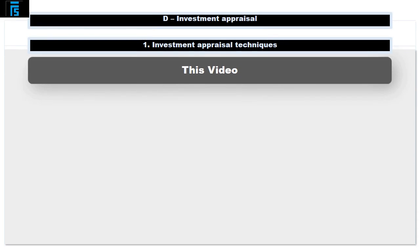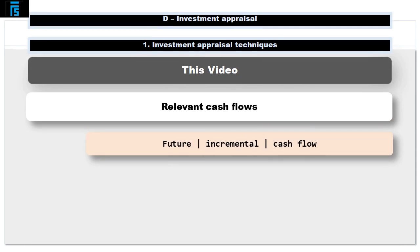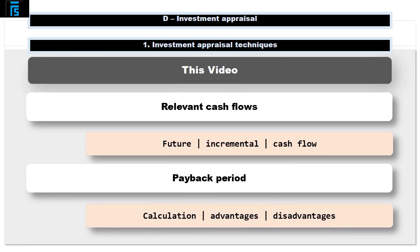In this video, we have considered how to identify the relevant cash flows in an investment appraisal decision that is cash flow based. First, we use the three-line test of future incremental cash flow. We have also considered a second investment appraisal technique, payback period — its calculation, advantages and disadvantages. In our next video, we turn our attention to the time value of money.